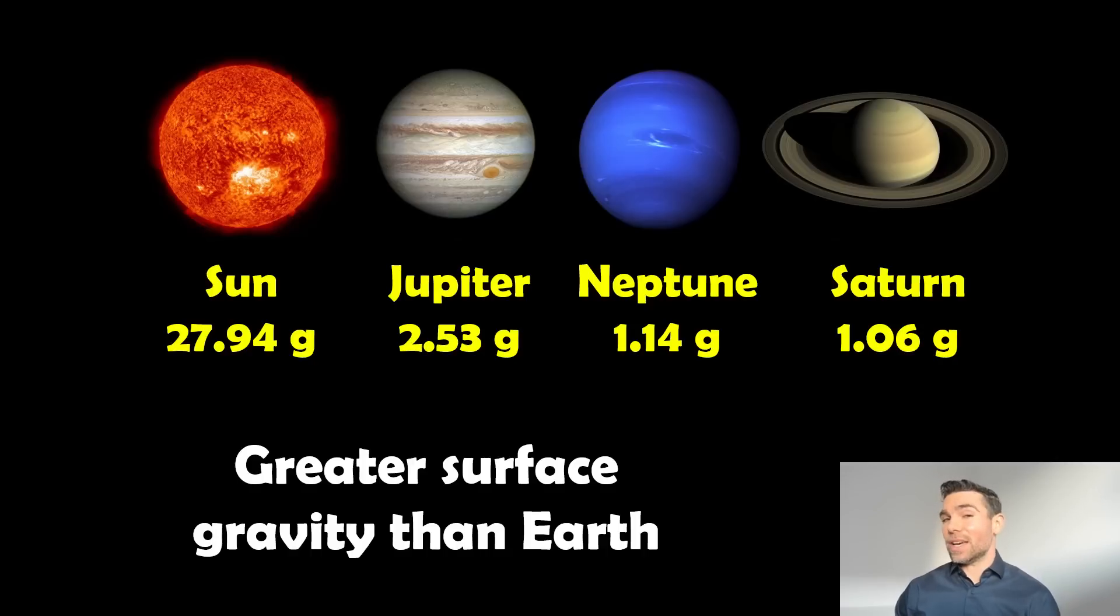And Saturn's almost the same as Earth, although you've got to query where's the surface on these gas giants? Where are we defining that? And it's normally to do with the atmospheric pressure where it's similar to Earth. So we go down to a level where we get similar atmospheric pressure.